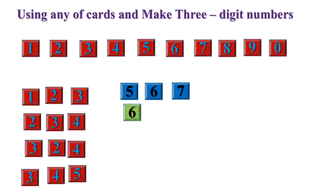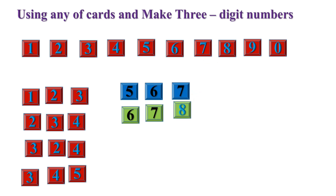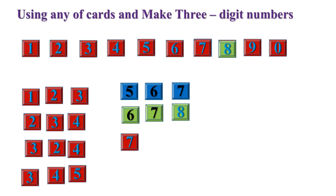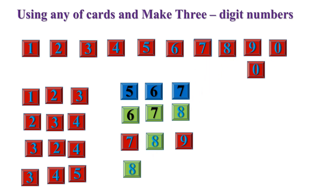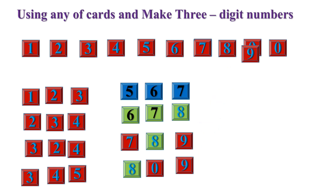Cards six, seven, and eight — the number is six hundred and seventy-eight. Cards seven, eight, and nine — the number is seven hundred and eighty-nine. Cards eight, zero, nine — the number is eight hundred and nine.